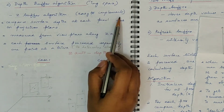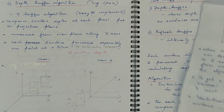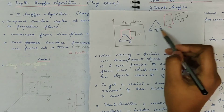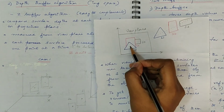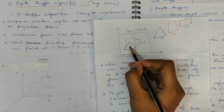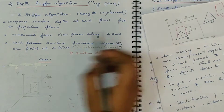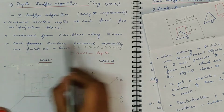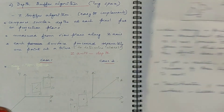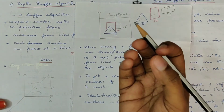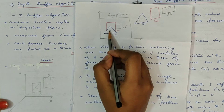This is one of the methods which is easy to implement. Here, the surface depth at each pixel position on the projection plane is compared. Say, for example, if you have multiple surfaces S1, S2, and S3, for a given pixel position, what is the surface depth for S1, S2, and S3 will be calculated from the view plane along the Z axis. After calculating this depth, each surface is processed separately, one point at a time. Whichever surface is closer to the view plane, that depth will be stored, and the intensity at that pixel position for that surface will also be stored.